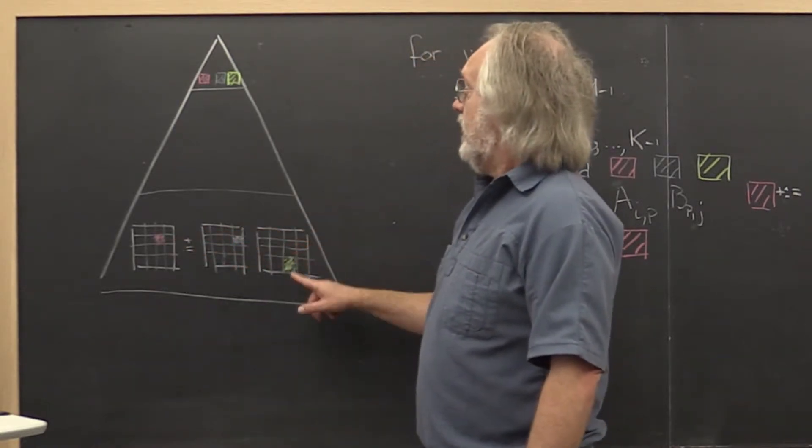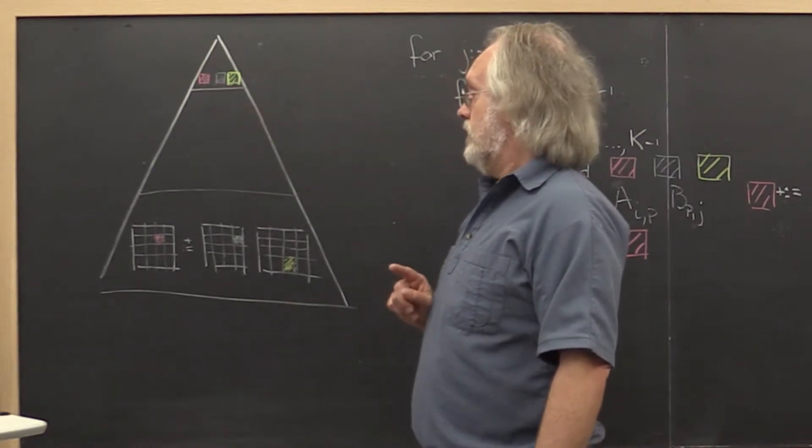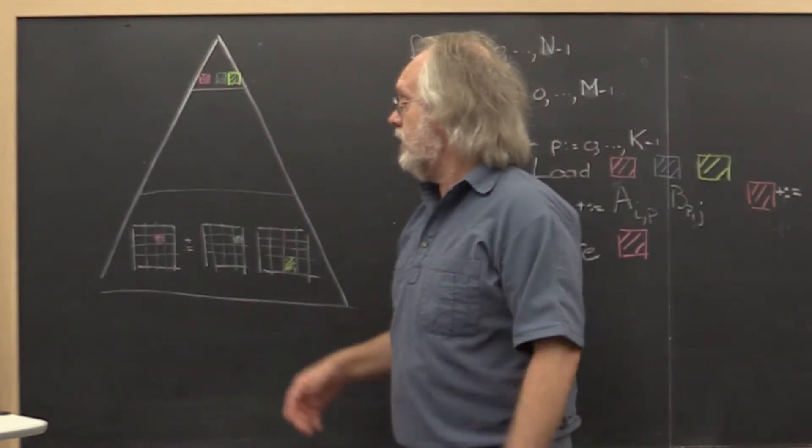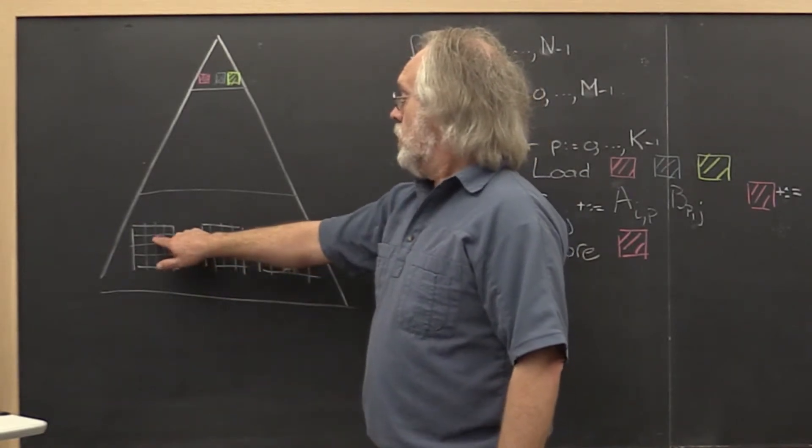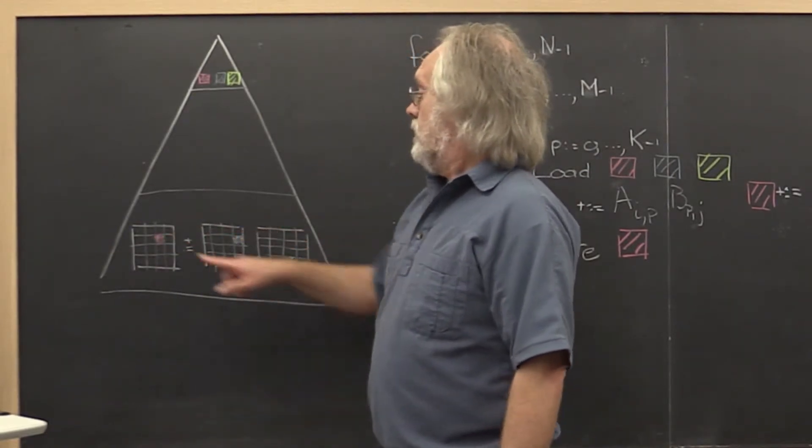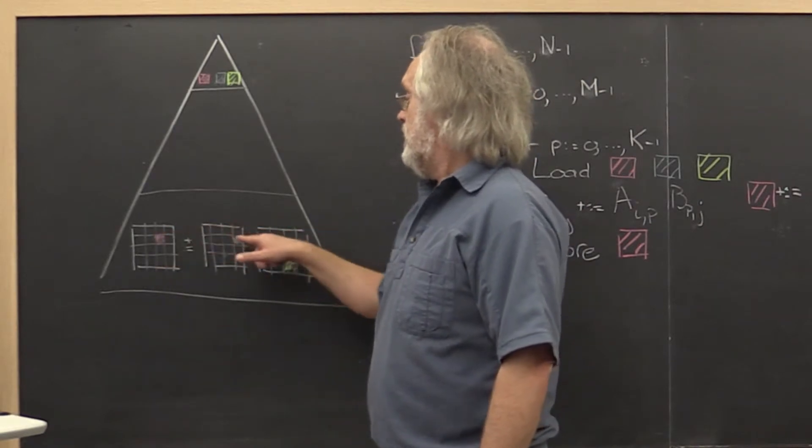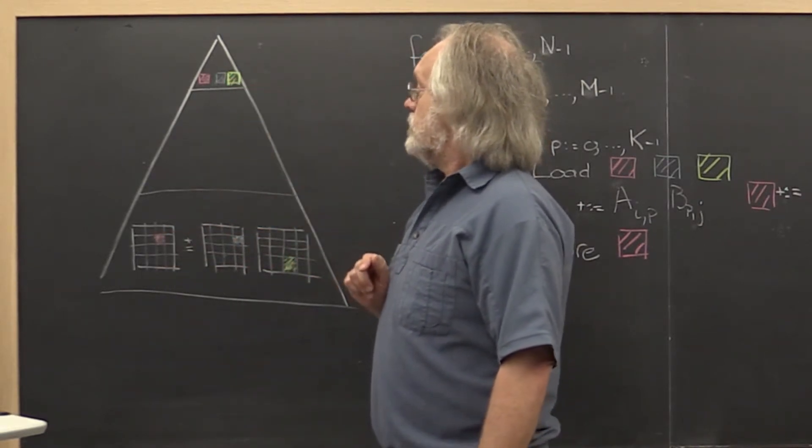In order to do that multiplication, their elements need to be in the registers. So a very naive way of looking at this would be to say, well when we get to this point in the algorithm, we move the three blocks - one from C, one from A, and one from B - into registers.